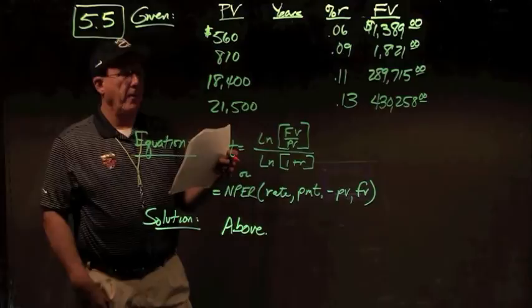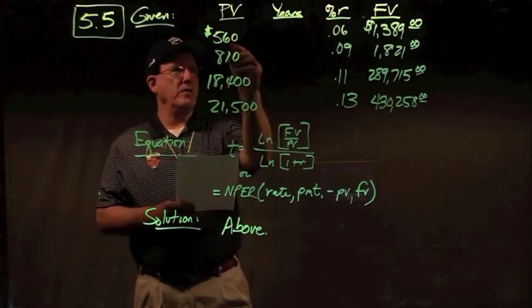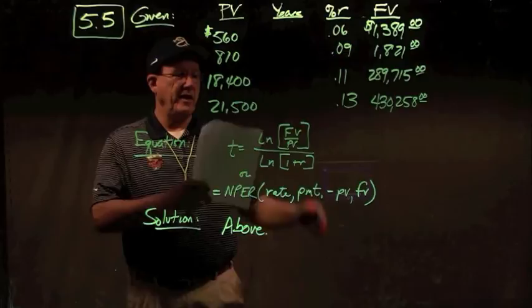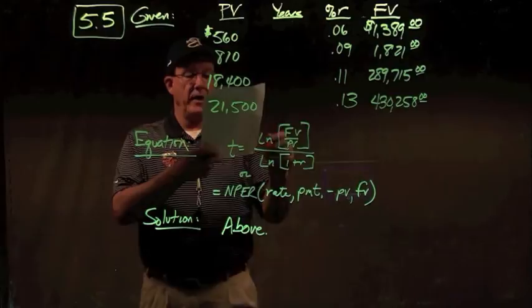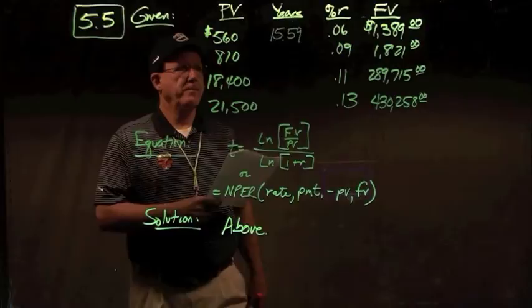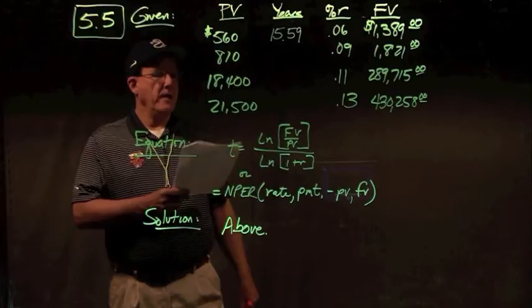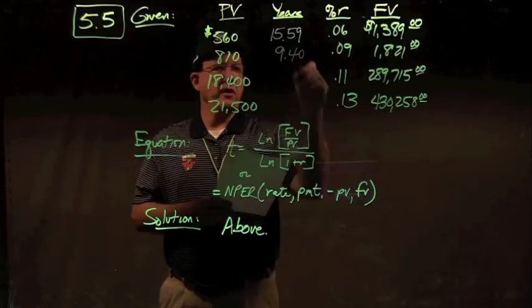To find how many years it takes to grow $560 into $1,389 at 6%: take ln(1389/560) divided by ln(1.06) — that gives 15.59 years. Second case: ln(1821/810) divided by ln(1.09) gives 9.40 years.